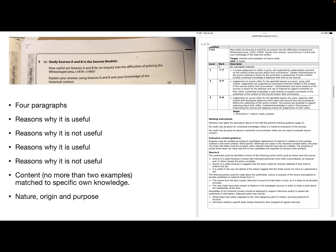The specific inquiry are given applying valid criteria with developed reasoning. So it's really covering all of those reasons why it's useful, reasons why it's not useful. Now, the markers that are given indicative content that they can use, and you'll see it here. So the usefulness for source A, it's useful because it shows that individual policemen were often outnumbered as Canavan and 17 others stoned the police constable. So that's directly in the source there. It's useful because it suggests that the police might be violently attacked if they tried to enforce the law.